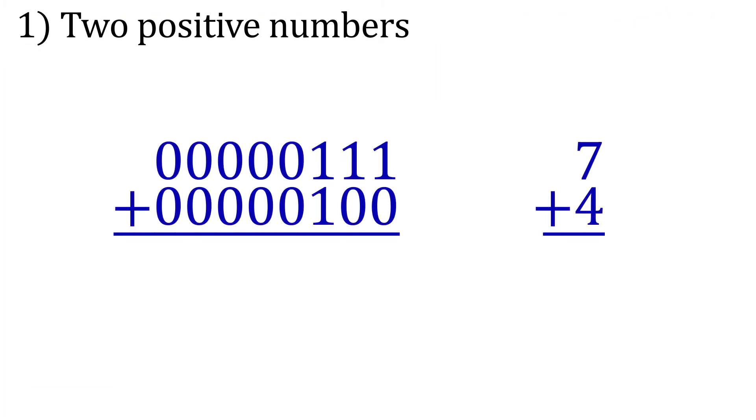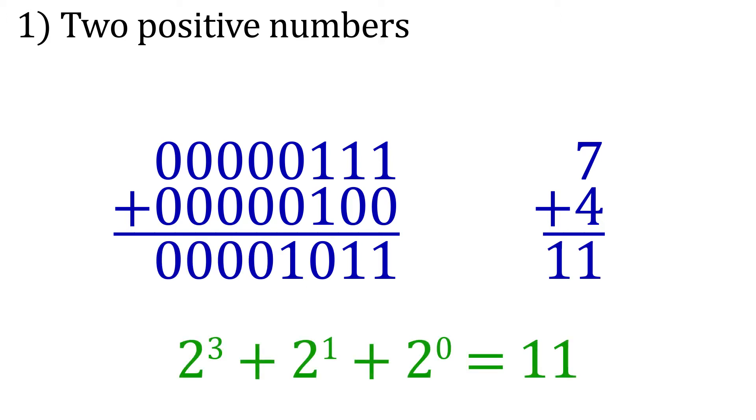Let's add two eight bit positive numbers. We will place the equivalent decimal form next to the binary so we can see how this gives us the same answer. So here we have seven plus four. Simply add these two binary numbers like we have learned before. And there we go. We have eleven in uncomplimented binary.